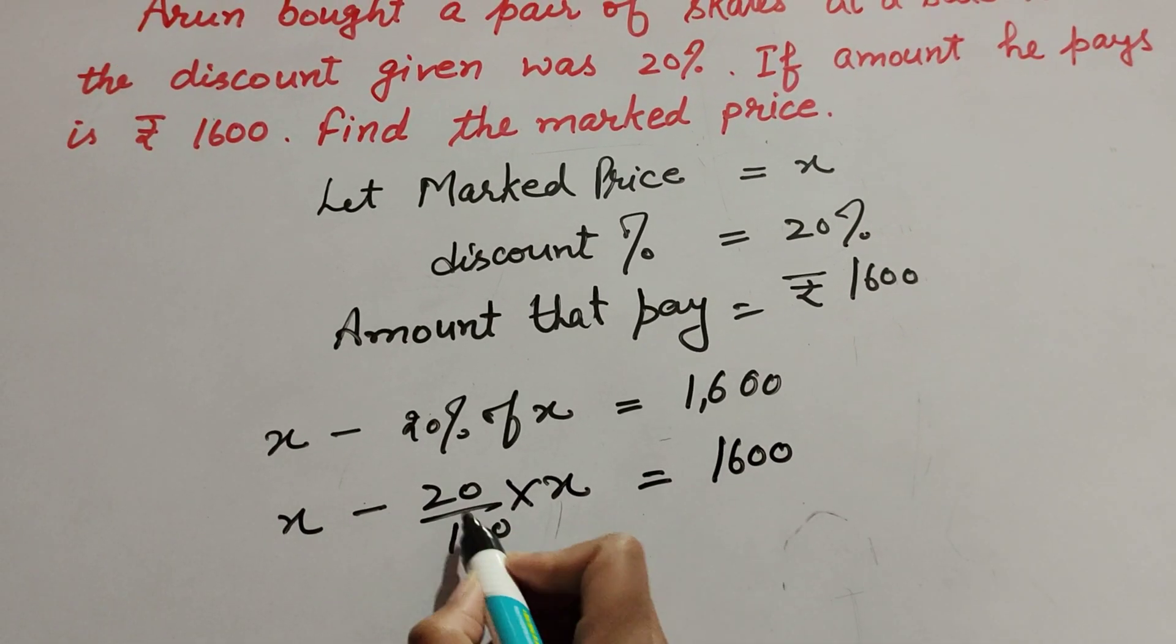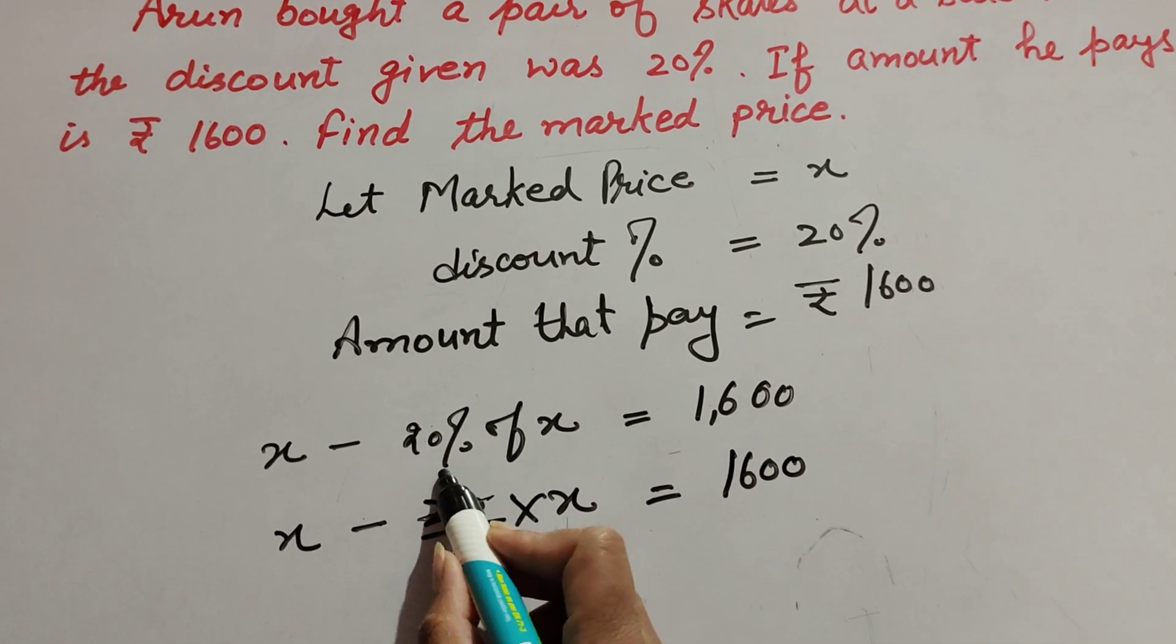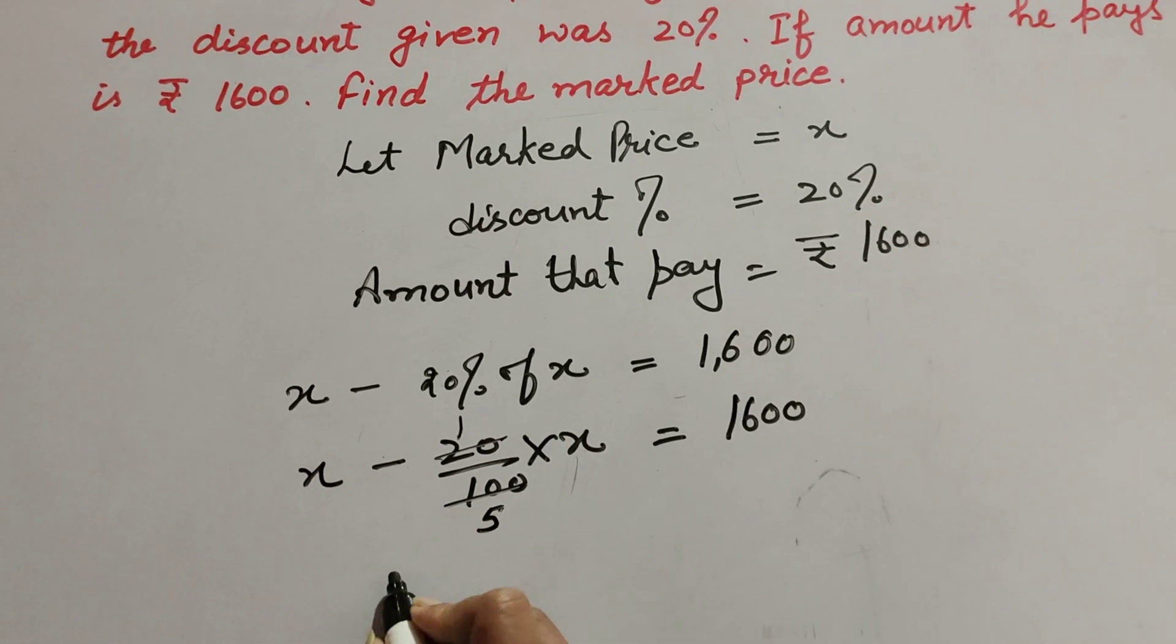20 and 100 both are divisible by 20, so we cancel them. One times 20 is 20, five times 20 is 100.